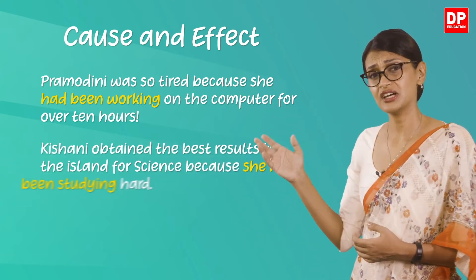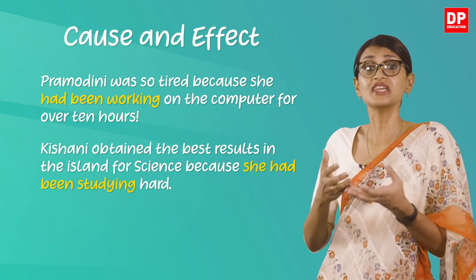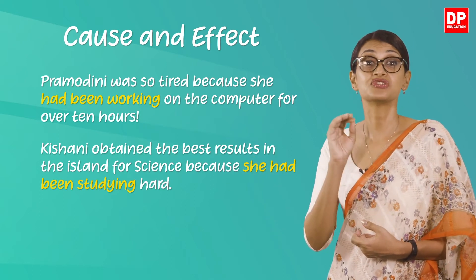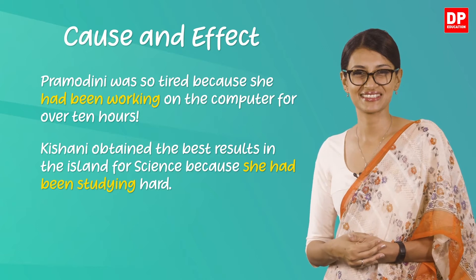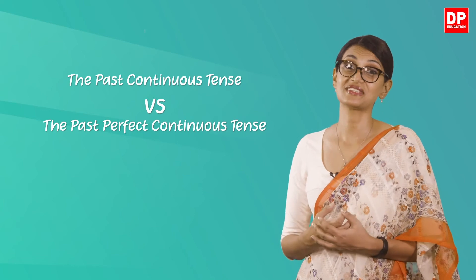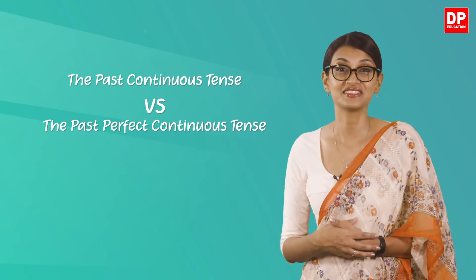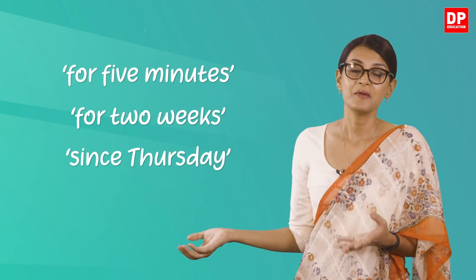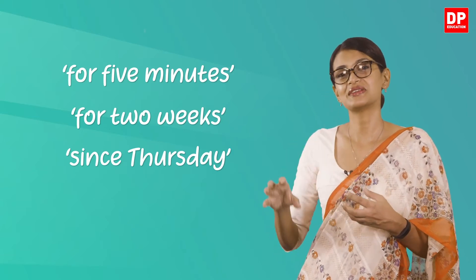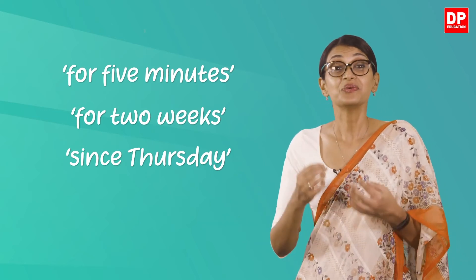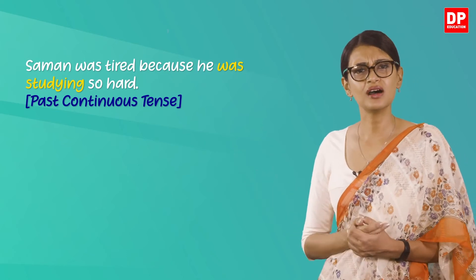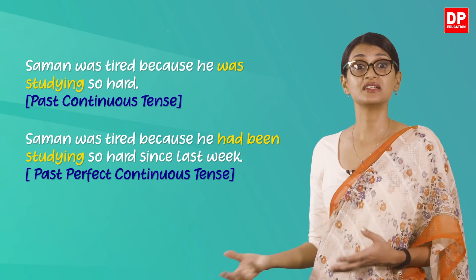Another example: 'Kishani obtained the best results in the island for science because she had been studying hard.' The effect is that Kishani obtained the best results, and the cause is that she had been studying hard. Since we have already done a lesson on the past continuous tense, you shouldn't get too confused. If you do not include a duration such as 'for five minutes', 'two weeks', or 'since Thursday', many speakers choose to use the past continuous rather than the past perfect continuous. This can change the meaning of the sentence. For example: 'Someone was tired because he was studying so hard' versus 'Someone was tired because he had been studying so hard since last week.'